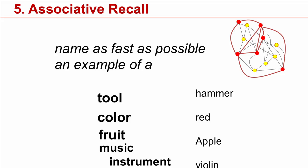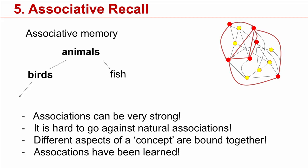And most likely, three of the four items that came into your mind are correct: hammer, red, apple, maybe not the violin. This is sort of an odd example. So associations can be strong.